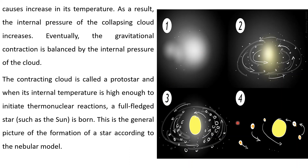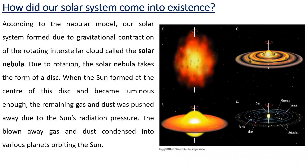This is basically the schematic diagram of how a star is born from the nebular theory. This is an interstellar cloud of gas and dust. Due to gravity it starts contracting, then collisions between its different particles start, the kinetic energy of the particles increases, and this increases the temperature of the cloud. At a point, the gravitational collapse is balanced by the internal pressure of the gas cloud, and eventually the temperature is so high that thermonuclear reaction kicks in and the newly full-fledged star is formed.